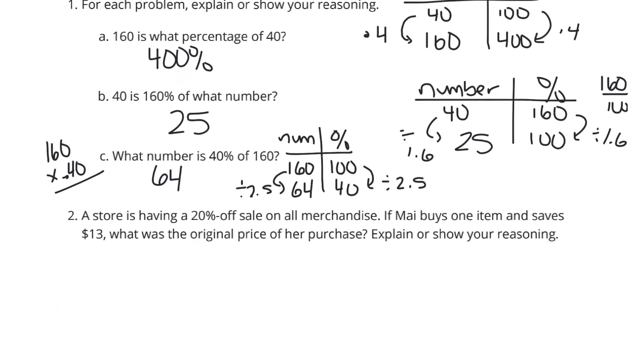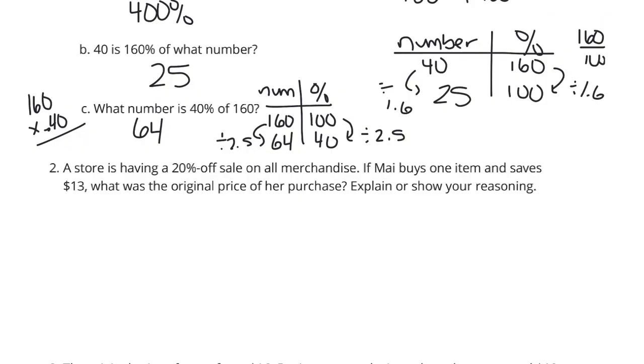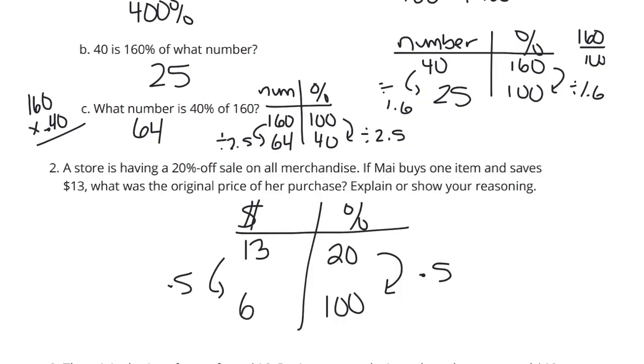Number two. A store is having a 20% off sale on all merchandise. If Mae buys one item and saves $13, what was the original price of her purchase? Explain or show your reasoning. If we make a table again, we can have our price and our percent. We know she's saved $13. And this $13 is the 20% off total. The total is 100%. So how do I get from 20 to 100? We are going to multiply by 5. So if I take 13 and multiply by 5, I get $65. So $65 was the original price because 20% off was 13.